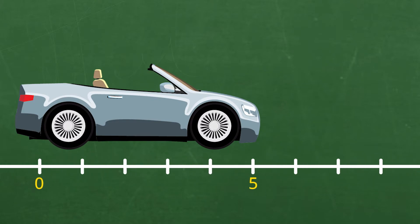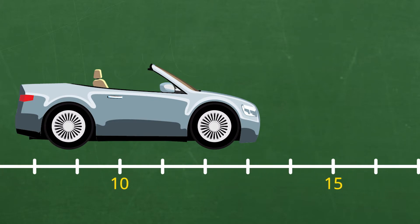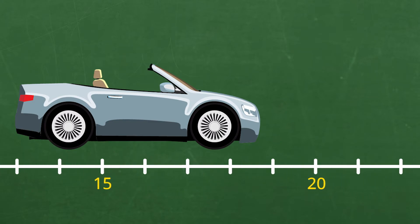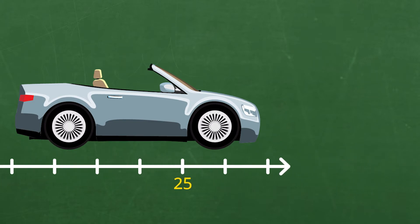Let's say that driving a car is like skip counting by fives. You can start skip counting with any number, but we'll just stick with starting with zero.